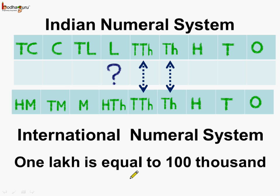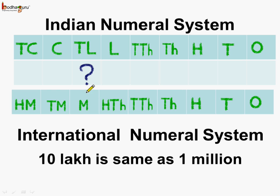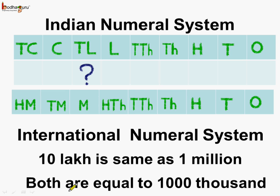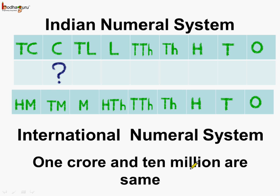Next we come to the ten lakhs place, which is the same as the millions place. So ten lakh is the same as one million, and both are equal to one thousand thousands. Next, crores in the Indian numeral system is equal to ten million in the international numeral system. So one crore and ten million are the same.